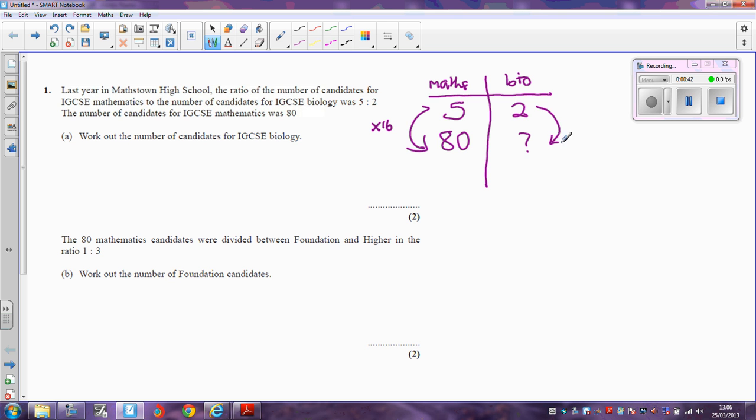Whatever I do to the number of maths candidates, I must also do to the number of biology candidates. If I multiply 2 by 16, I get 32. So the ratio 5 to 2 for maths to biology must be the same as 80 to 32. The number of candidates for biology must be 32.